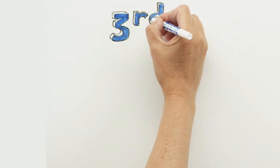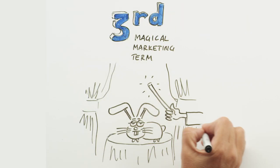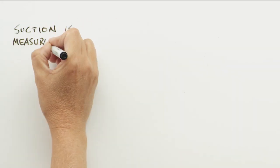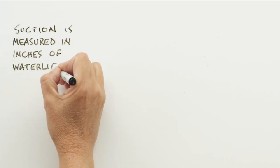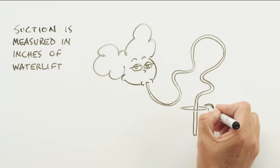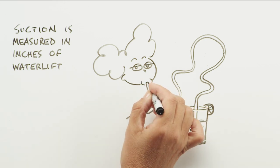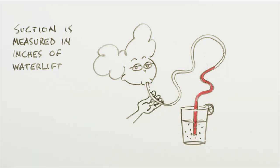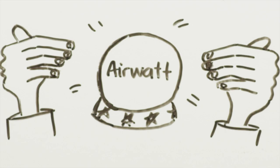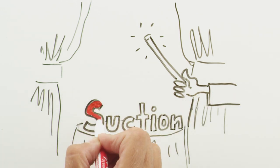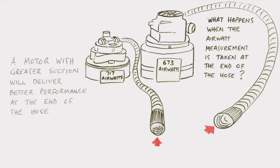And this leads us finally to our third magic marketing term, suction. Suction is measured in inches of water lift. This is determined by sucking a one-inch column of water vertically to its maximum height in inches. So, we've talked about air watts and air flow, but suction is what is really important. A motor with greater suction will deliver better performance at the end of the hose.